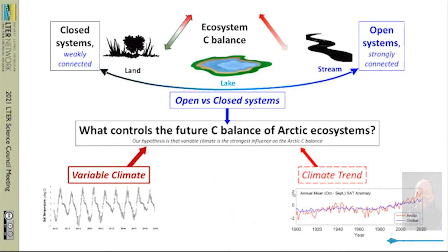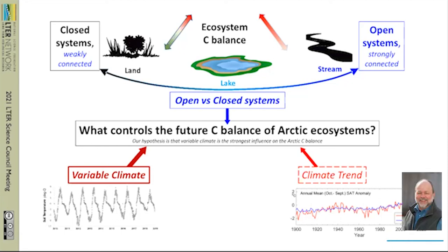At the top is our conceptual model for the existing LTER, going from the terrestrial system where nutrient cycles are fairly tight and closed — and because of that closure, they're weakly connected spatially — relative to the streams on the far right, which are very open systems in terms of nutrients and strongly connected to one another. The lakes are probably somewhere in between. I showed you the effects of climate trends and also climate variability. For our renewal, the core hypothesis is that a highly variable climate will have a very strong influence on arctic carbon balance.